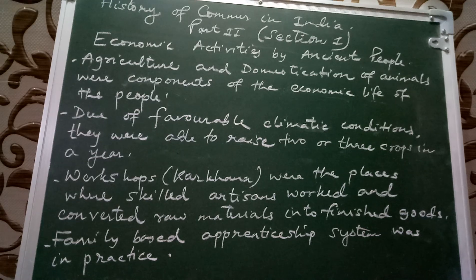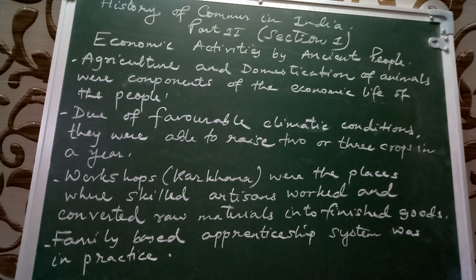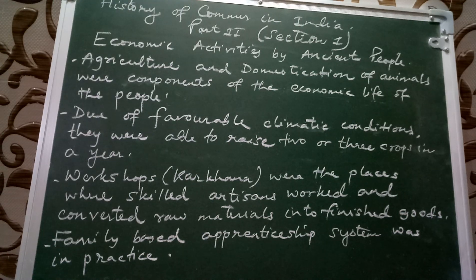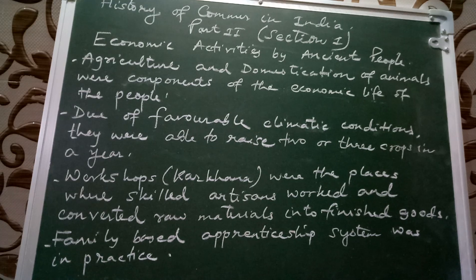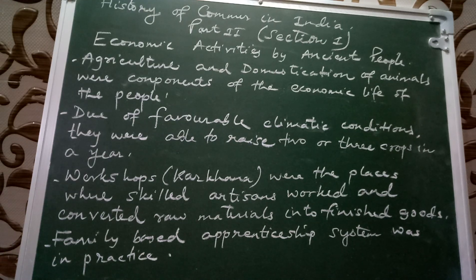Artisans, craftsmen, and skilled laborers learned different kinds of skills and knowledge, which passed from one generation to another. So the three economic activities were: first, agriculture and domestication of animals; second, workshops or car khanas, which are present-day industries; and third, the family-based apprenticeship system, which involved passing skills from one generation to the other.